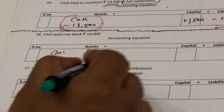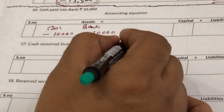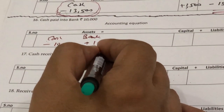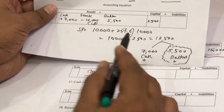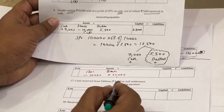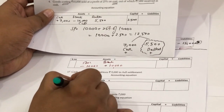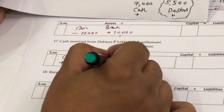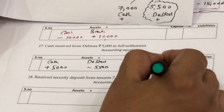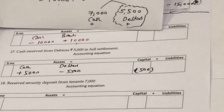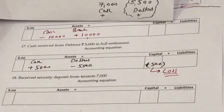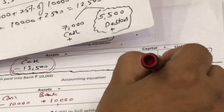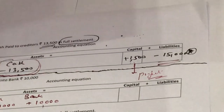Next transaction: cash received from debtors 5,000 in full settlement. From transaction 4, the debtors were 5,500. We add 5,000 to cash and subtract the full 5,500 from debtors since it is full settlement. The 500 rupees difference is a loss and is subtracted from capital. Always remember: when you receive less from a debtor it is a loss for the firm subtracted from capital, but when you pay less to a creditor it is profit added to capital.